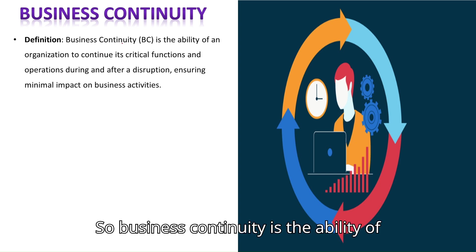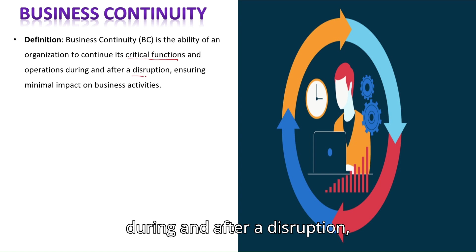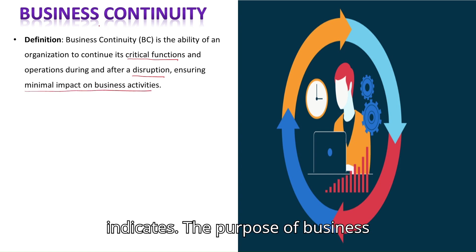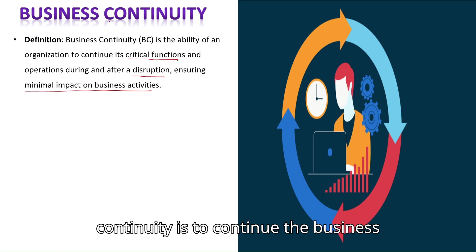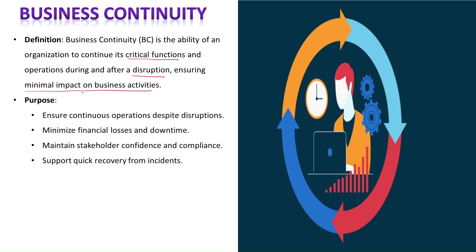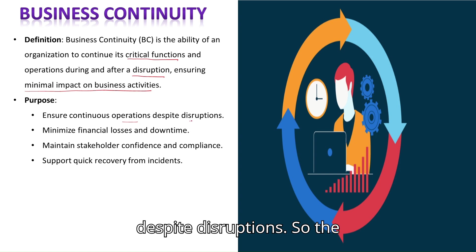Business Continuity is the ability of an organization to continue its critical functions and operations during and after a disruption, ensuring minimal impact on business activity. The purpose of Business Continuity is to continue business operations during and after an incident or disruption, ensuring continuous operations despite disruptions.